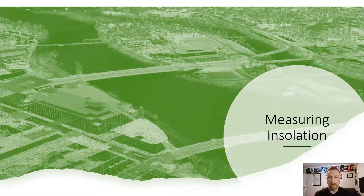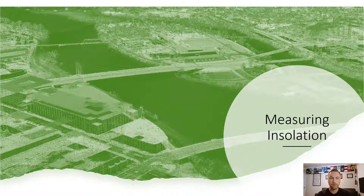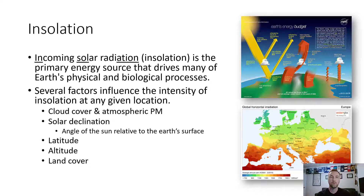For this next section — which feeds directly into this week's lab — we'll discuss measuring insolation. The lab doesn't get into many of the details about why or how GIS does what it does, so we'll cover that here. Insolation is actually a combination of three words: incoming solar radiation. Incoming solar radiation is the primary energy source that drives many of Earth's physical and biological processes — essentially, it's energy coming from the sun.